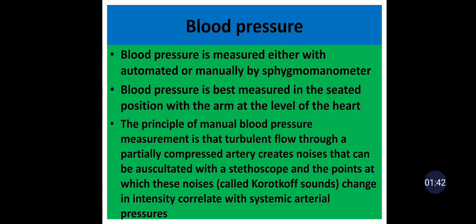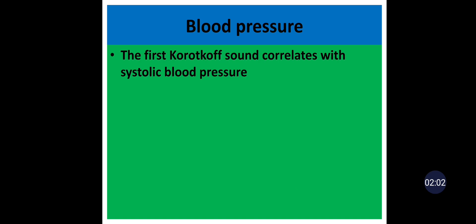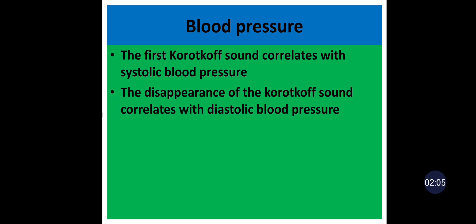Blood pressure can also be measured in the supine or standing position. When you inflate the cuff above the systolic blood pressure, it completely compresses the brachial artery — no blood flow and no sounds. When you start deflating, it reaches a point where systolic blood pressure exceeds the cuff pressure. At this time, blood starts to flow and creates the first Korotkoff sound, which is equivalent to the systolic blood pressure. When you keep deflating, it reaches the level where diastolic blood pressure exceeds the cuff pressure — no compression and no sound. So the point where the Korotkoff sound disappears is equivalent to the diastolic blood pressure.